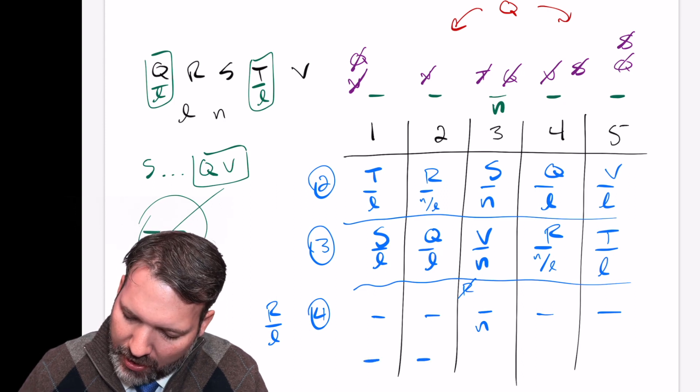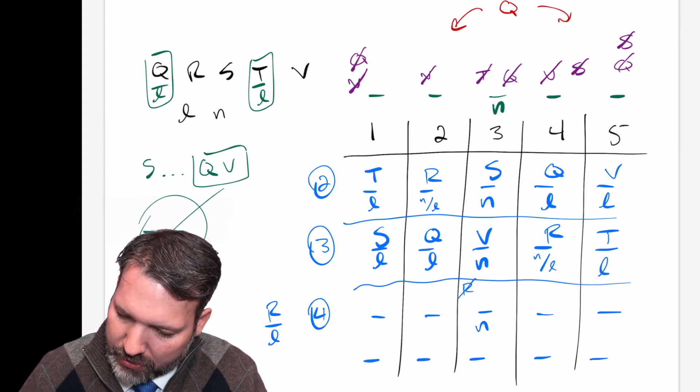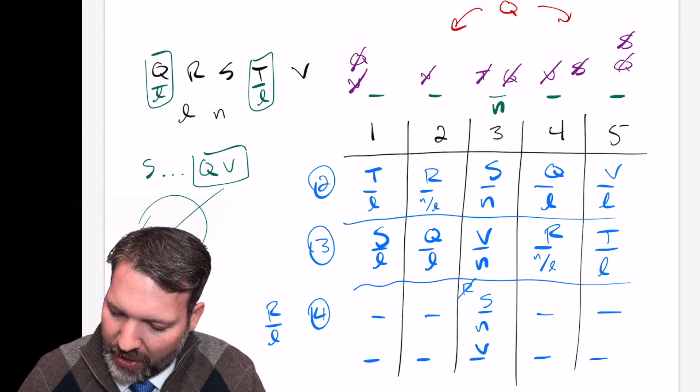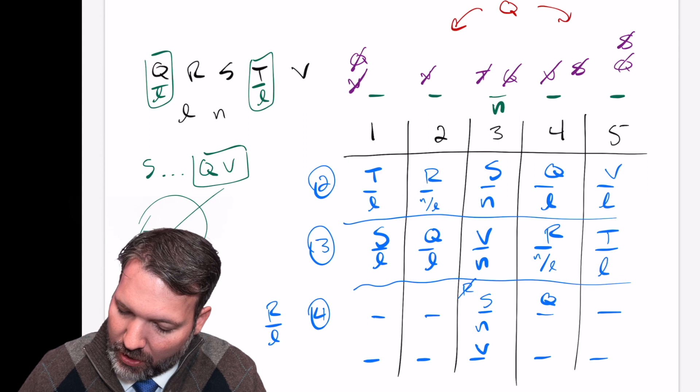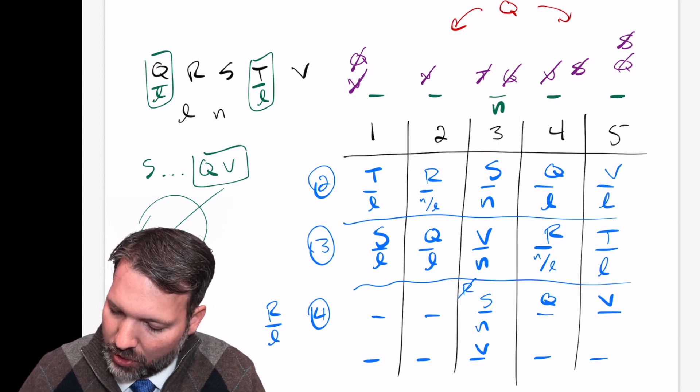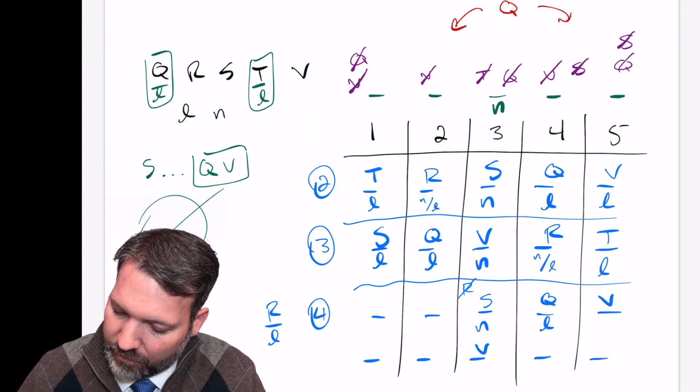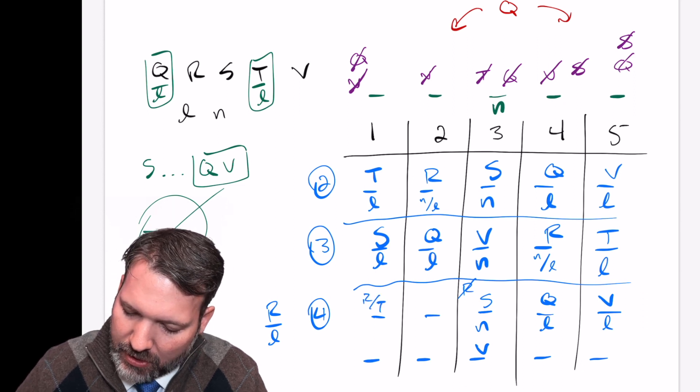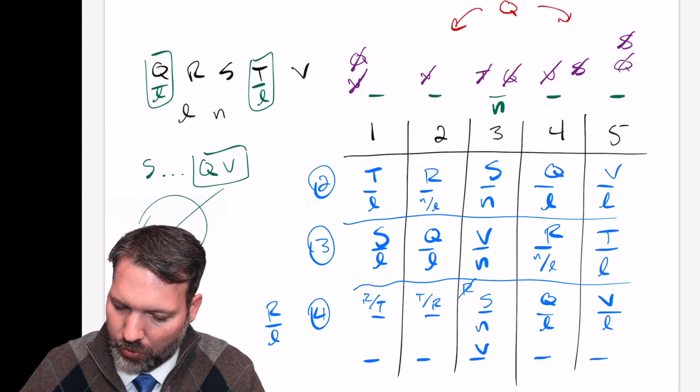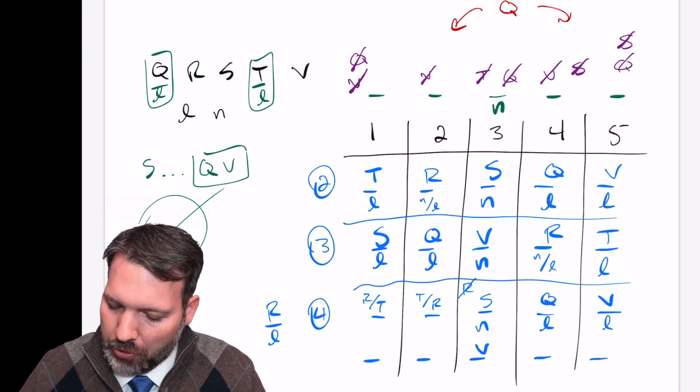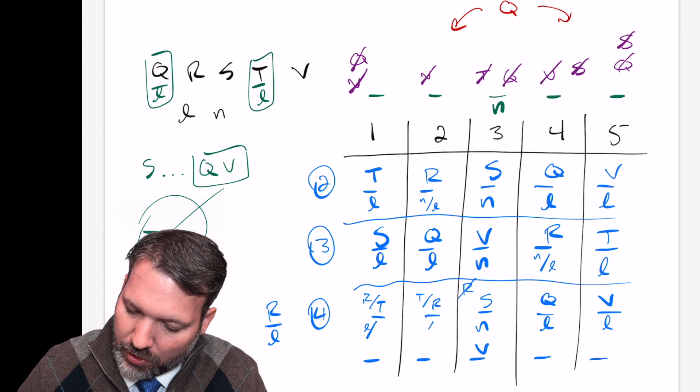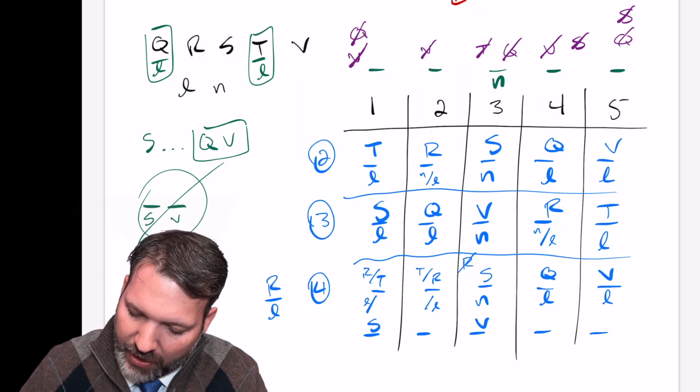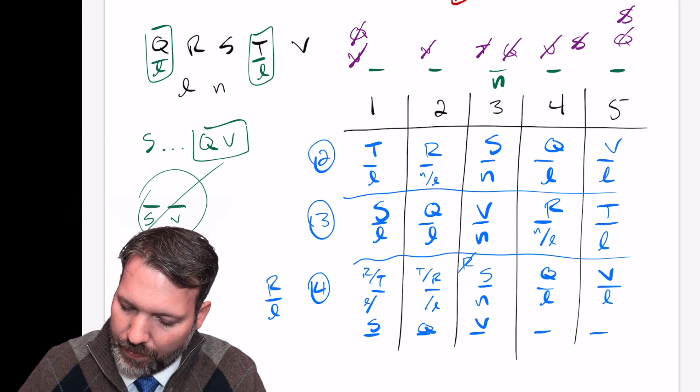So maybe it's worth setting that up and checking out both of those possibilities. What happens if S is third? What happens if V is third? Of course, S has to be before Q and V. And so if S is third, it would be Q, V, four and five. Q is always local. S and V are always different. So V would be local here. And then it seems to me that R and T could just kind of switch now between slots one and two. And of course, wherever R ends up would be a local call. So at least one of these is local and the other one we're not sure about. If it's V that's going third instead, well, then it would have to be S, Q, V in one, two, three.